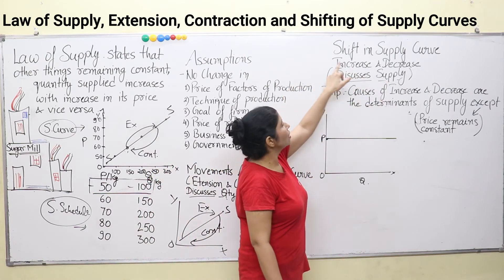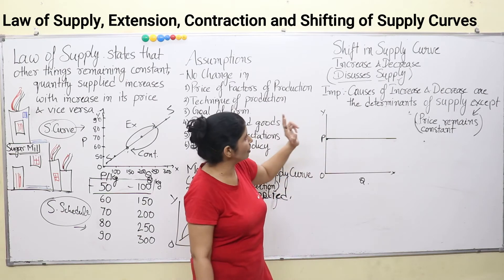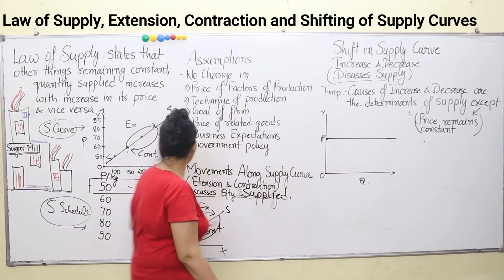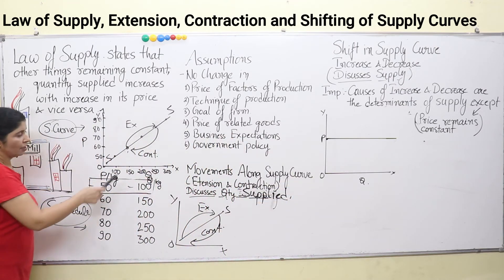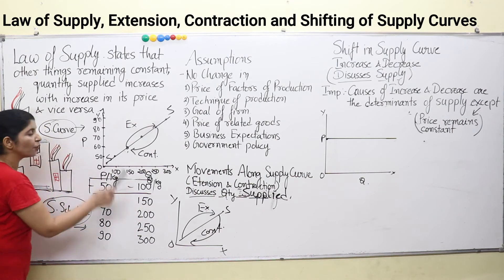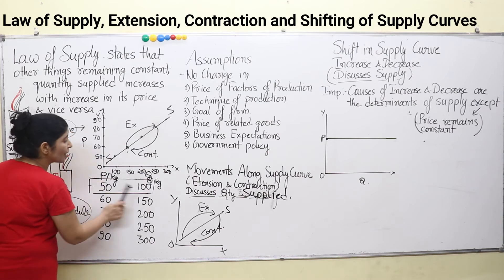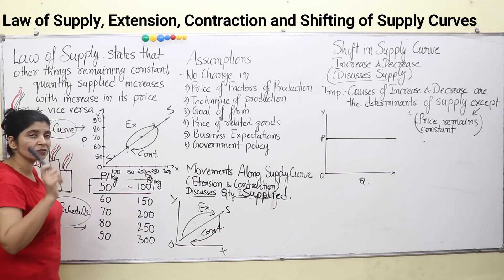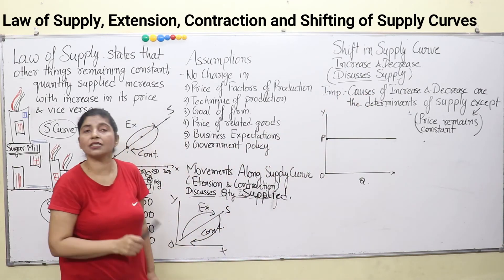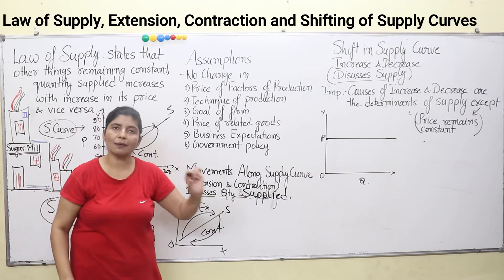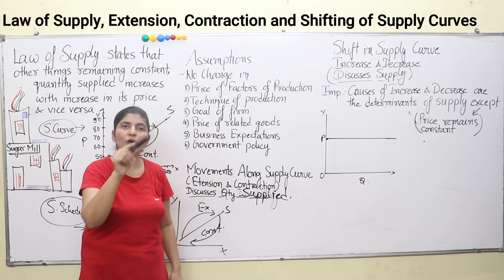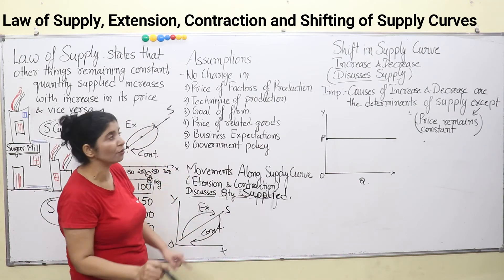Increase and decrease in supply is also known as a shift in supply curve, and it discusses the whole supply — not individual quantities. One schedule of quantity supplied makes up the supply, so the whole schedule and whole curve are being discussed here. Extension and contraction discuss quantity supplied, which is an individual quantity, while supply means the whole set of quantity supplies — the whole schedule, the whole curve.